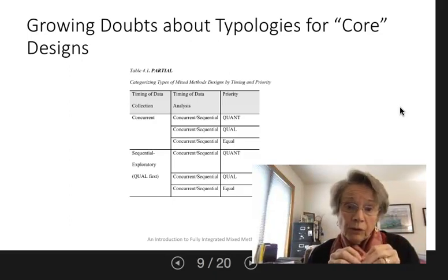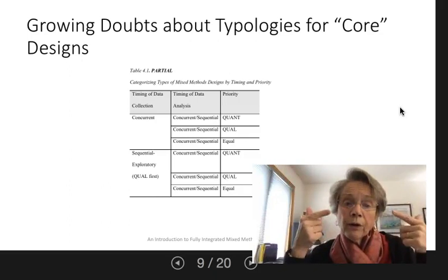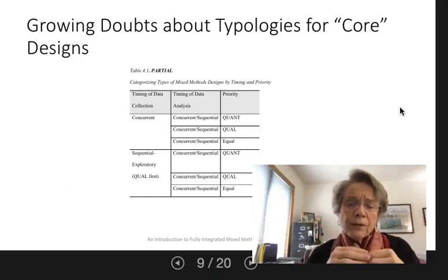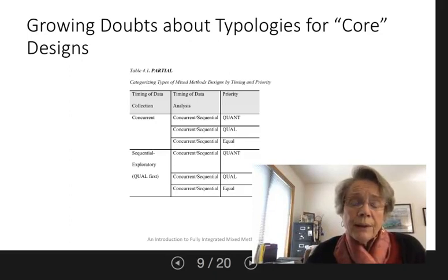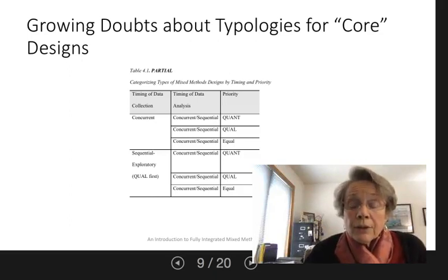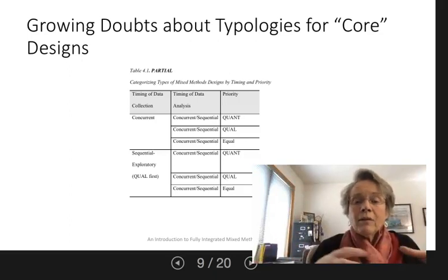Usually when people do distinguish phases, they accompany it with a flow chart, and there's pretty wide agreement that those are very helpful in a mixed method study — they help the reader see what has been done. I've grown to have doubts about the core designs; I'm certainly not the only one. I think they're good for teaching purposes, but I just don't think they really match what you see in the literature, which I think, ironically, is a little bit ahead. When you look at examples in the literature, they seem ahead of the methodological literature.